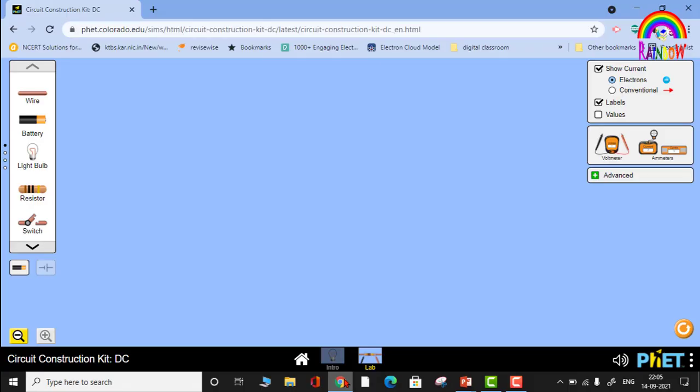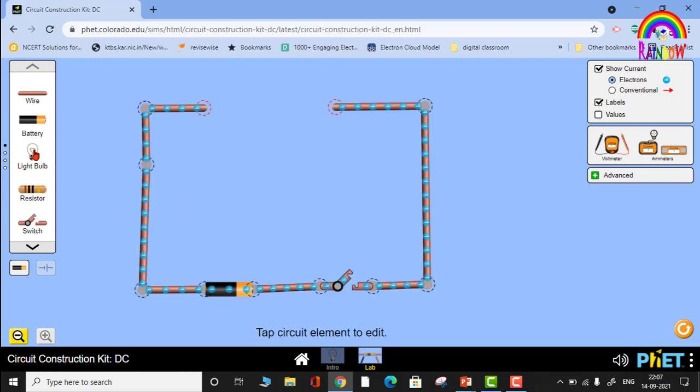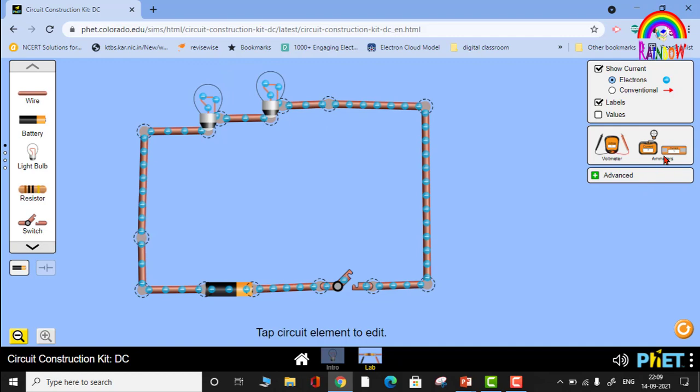Come on friends, let's go to the lab. Let me construct a simple circuit: battery, wire, switch, and bulbs. Let me use two bulbs and connect them in series. Here is the ammeter, bring it and connect here in series. Switch on. See, it's measuring the current through the circuit. It is 0.45 ampere.